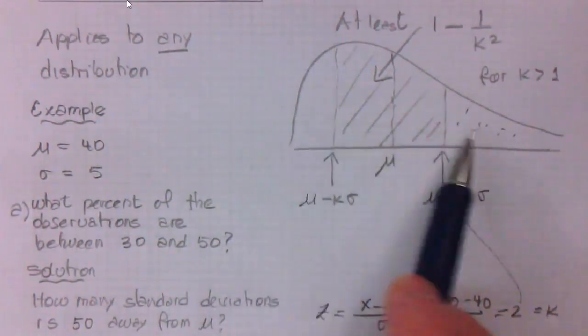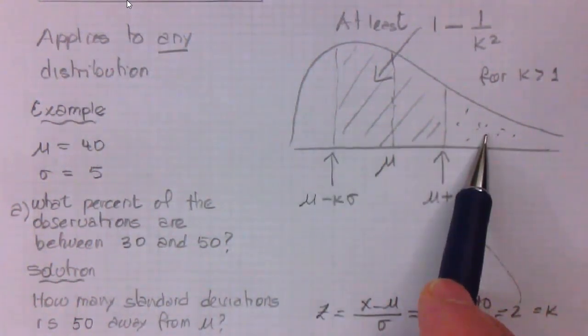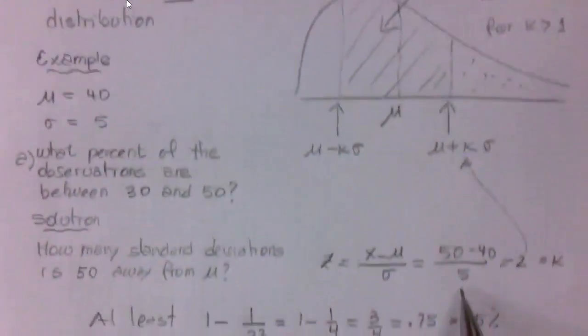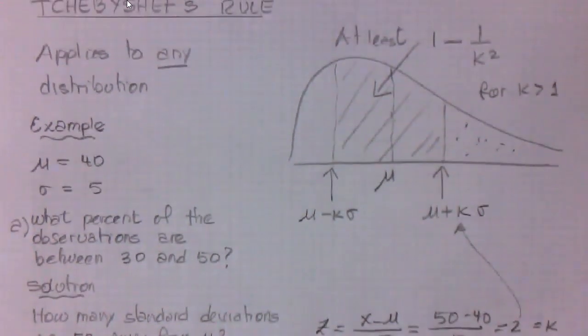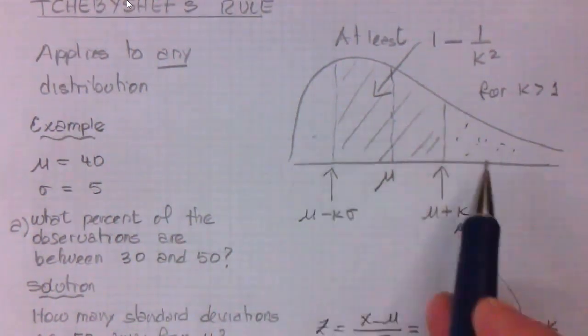But depending on the shape of the distribution, we could have nothing in the tails, or we could have a maximum of 25%, which is what remains. The remaining 25% could be evenly distributed between these two tails.